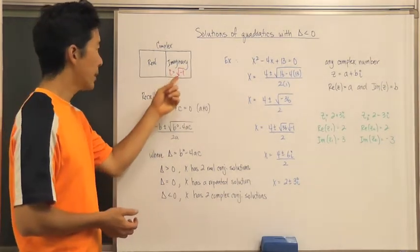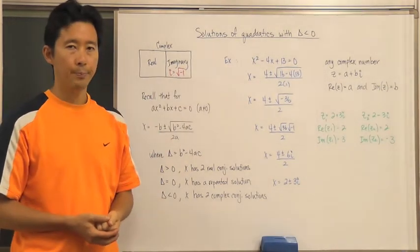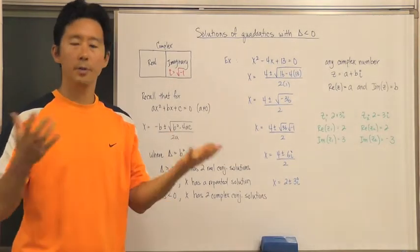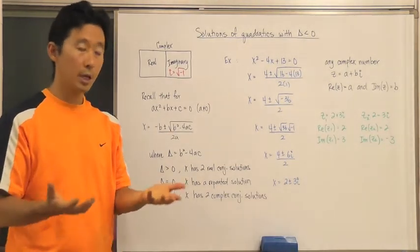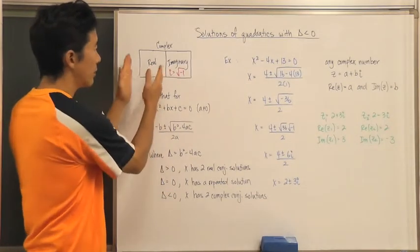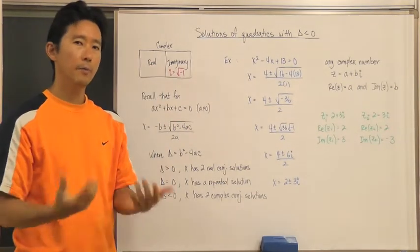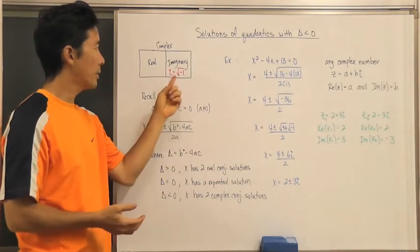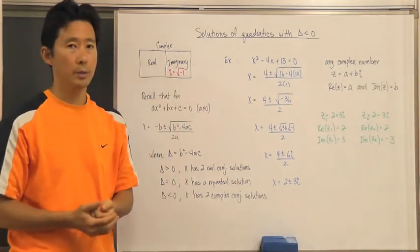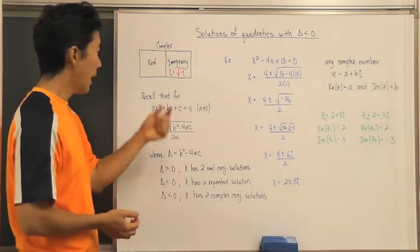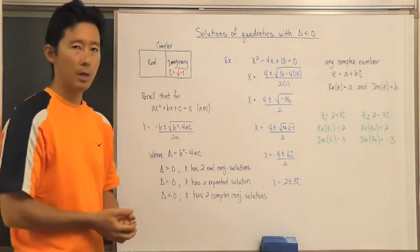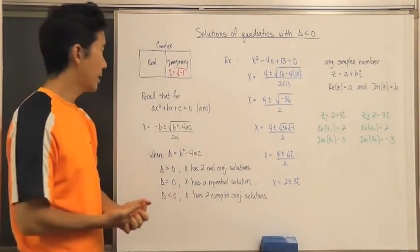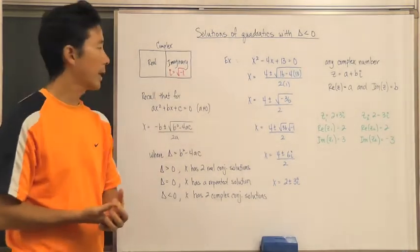The imaginary unit i is equal to the square root of negative one. Before, when we tried to take the square root of a negative number, that was not possible because we were only dealing with the real number set. Now that we've defined the square root of negative one to be i, we can work with those quantities. Together, these make up the complex number set, which is the largest and most comprehensive number set we have.